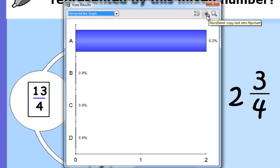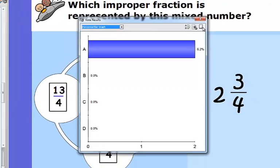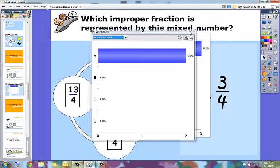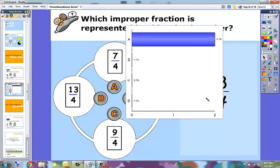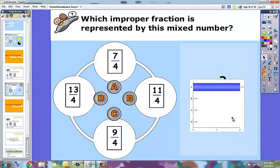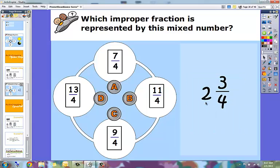And then the last one is this paste vote results, and that's going to paste a copy of this graph into my actual flipchart. So if I press that and I close this dialog box, I now have that chart that I can use just like an object and place it anywhere or I can delete it.